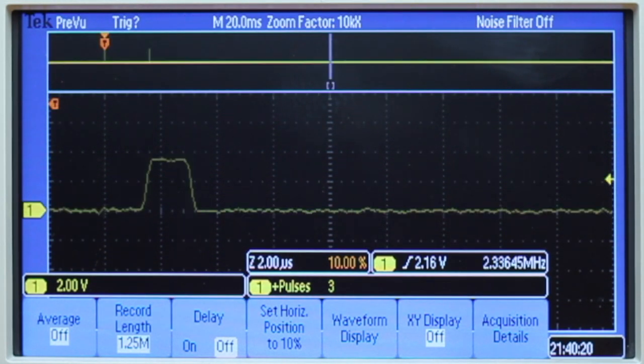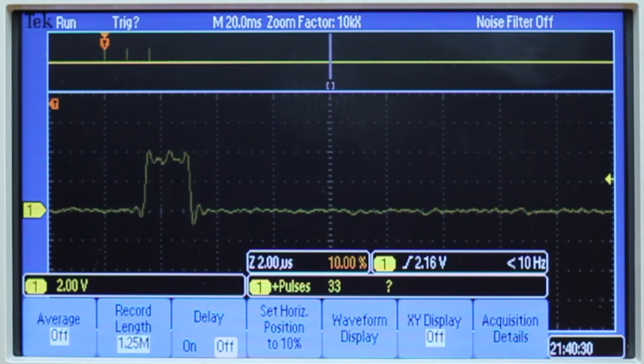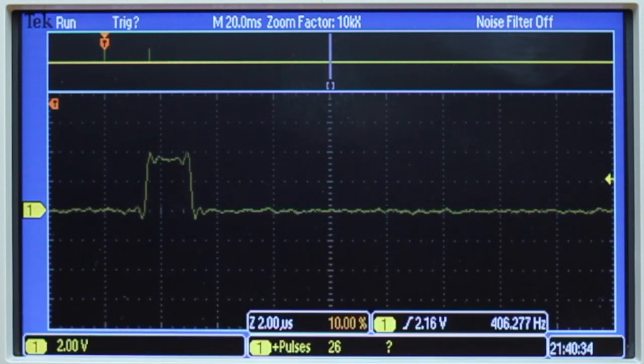But then when we try to zoom back into this, even though we're in full memory depth at over a million points, sometimes in this mode we miss the pulse in the middle or the gap. We never actually capture all three pulses. The Tektronix is really unable to measure all the pulses or capture all the pulses in the long sequence.